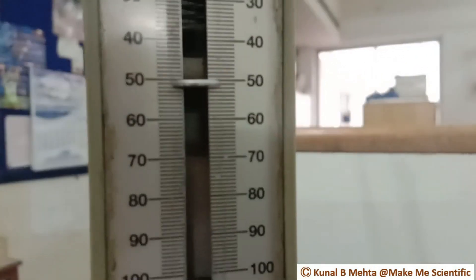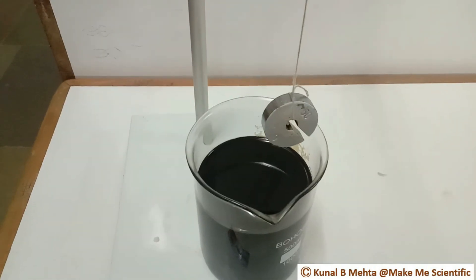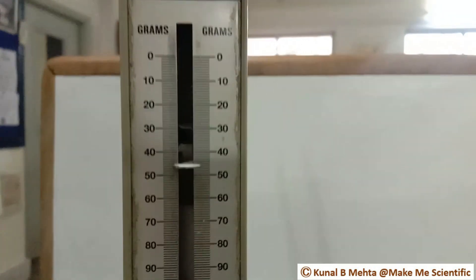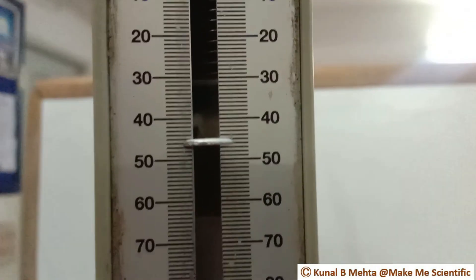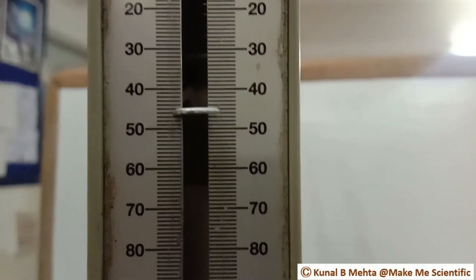Now I have suspended the entire apparatus over the engine oil. The weight of the body in air shows 50 gram force. Now I am going to gently lower it inside the oil. Oil is lighter than water, so the upthrust exerted by the oil on the object would be less, and the weight in the oil would be comparatively larger. The reading shows 46 gram force. This is the apparent weight of the body in the oil.